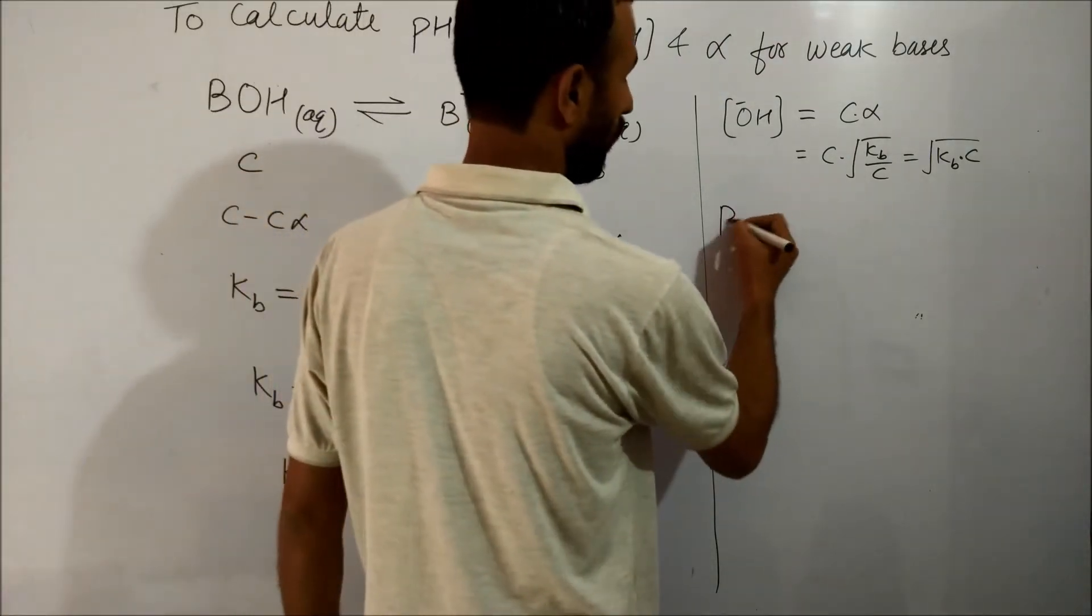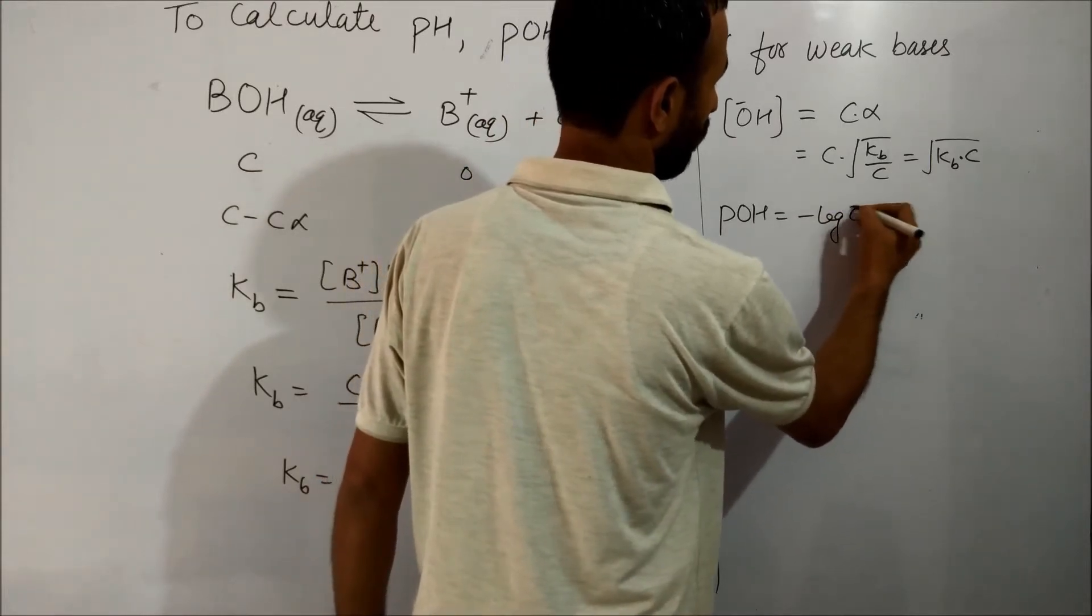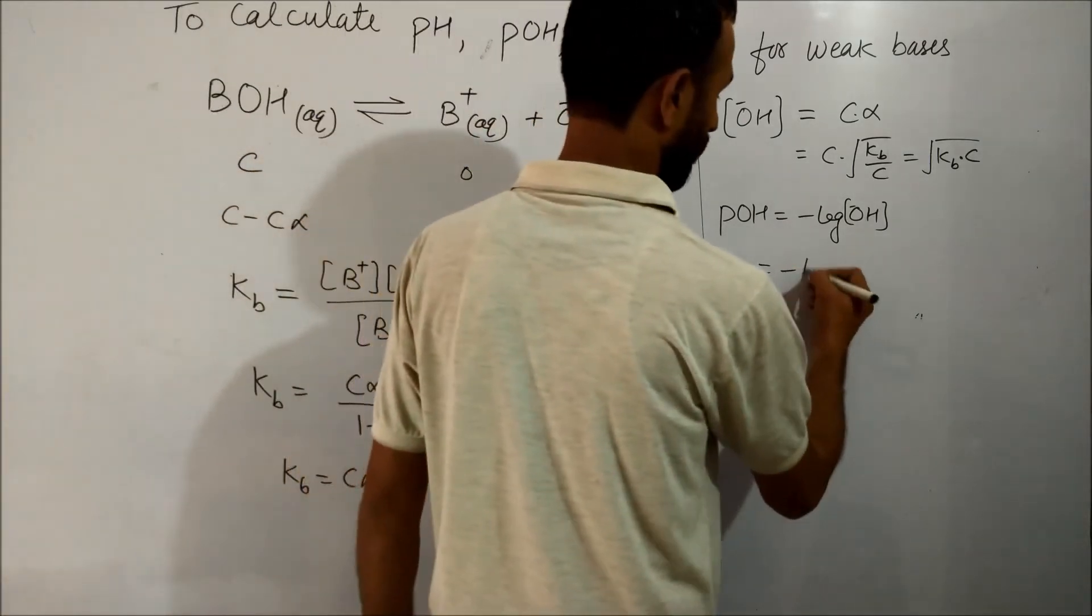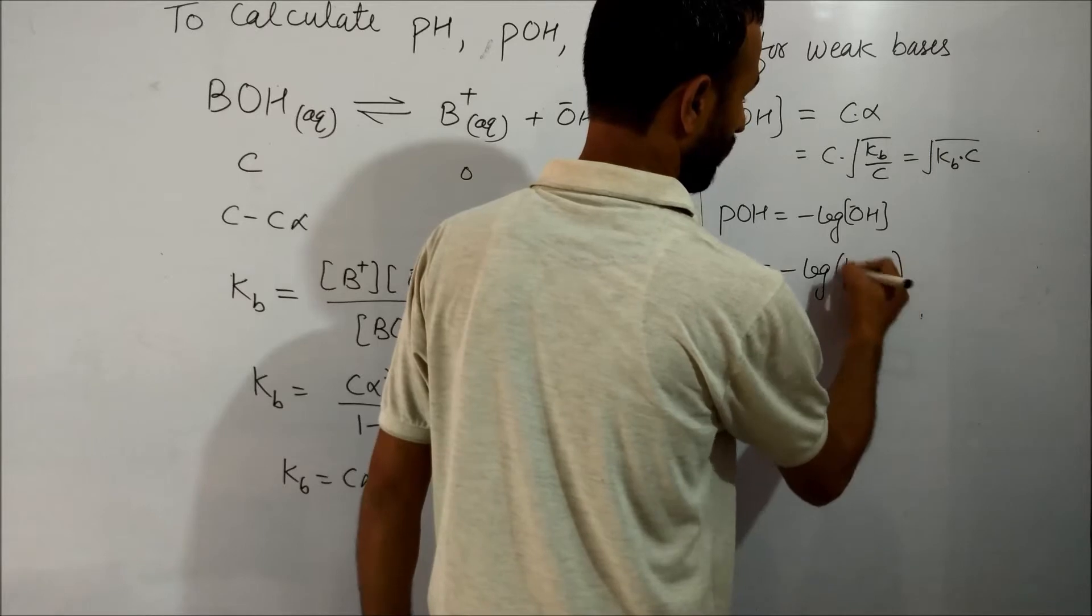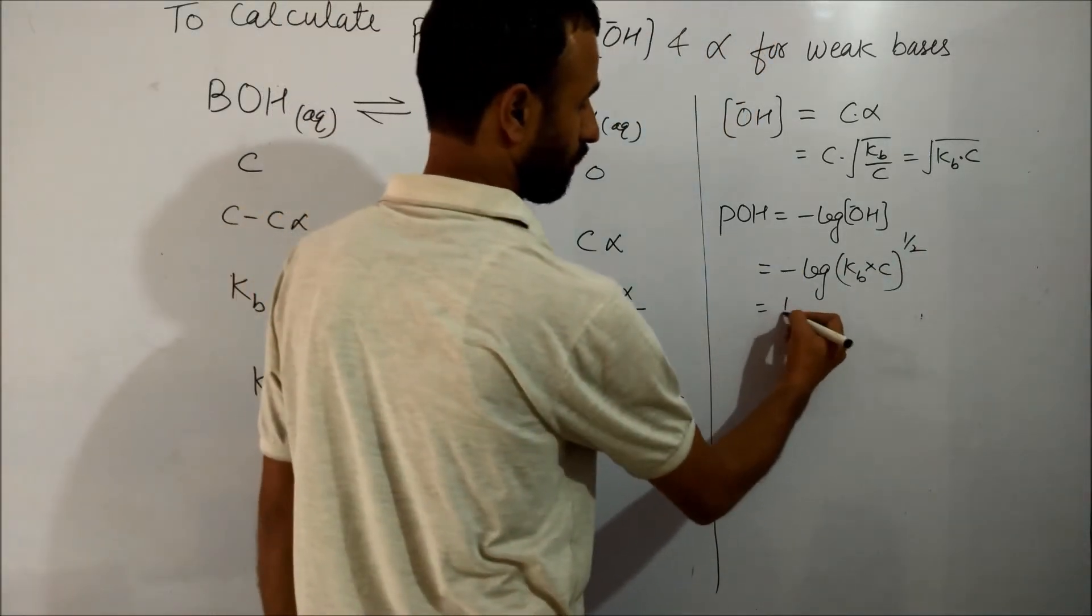So pOH is equal to minus log of OH⁻, that is minus log of (KB times C) raised to the power half. Half is common.